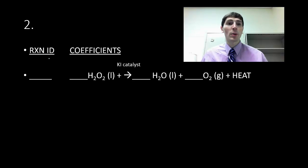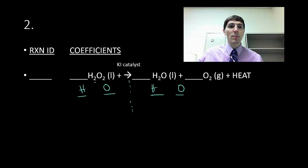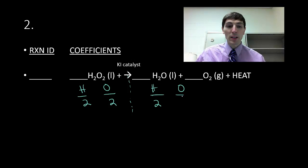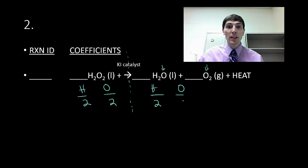We're going to do quite a few more. The next one is another reaction we did in class. We're going to divide up the reaction and list the elements: H and O on the left, and H and O on the right. Counting them up as-is, I have 2 hydrogen and 2 oxygen on the left-hand side. Going over to the right-hand side, I have 2 hydrogen. And for oxygen, step one says count all atoms present — I have 1 here and 2 here, giving me a total of 3.